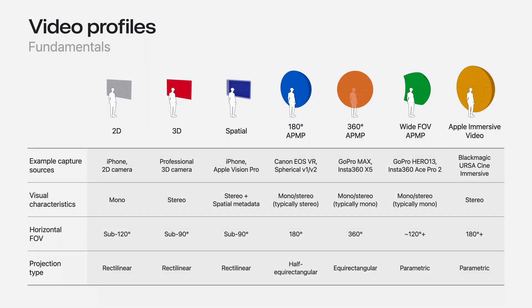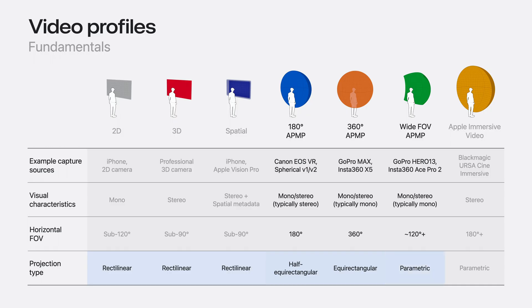New for VisionOS 26 is the Apple Projected Media Profile, which can support 180, 360, and wide FOV video from consumer-accessible cameras. A key differentiator within the projected media profile is the projection kind. 2D, 3D, and spatial video use a rectilinear projection. 180-degree video uses a half equirectangular projection, 360-degree video uses equirectangular, and wide FOV video uses a parametric projection.